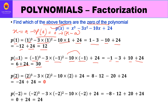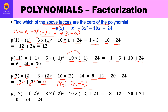Replacing x by 2: 2³ - 3(2²) - 10(2) + 24 = 8 - 12 - 20 + 24 = 0. So p(2) = 0, meaning 2 is a zero of the polynomial, and therefore x - 2 is one of the factors. Since the degree is 3, there will be a total of three factors.